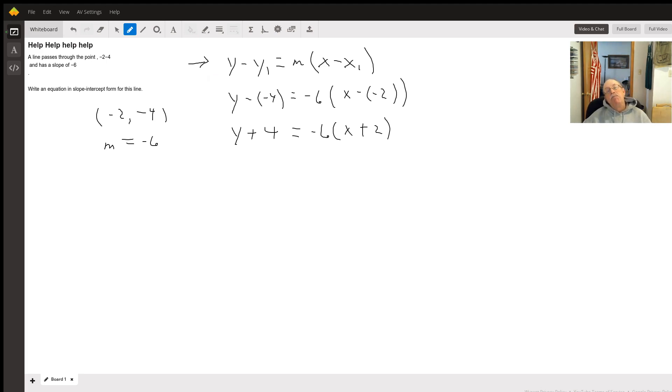Point-slope form is y - y₁ = m(x - x₁), where x₁ and y₁ are the x and y coordinates in your point, and m is the slope. So I get y - (-4) = -6(x - (-2)).